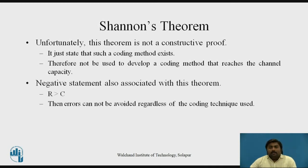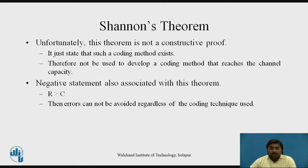A negative statement of this theorem also exists. The positive statement is that if R is less than or equal to C, by using any coding techniques you can achieve maximum reception with low probability of error. But in the negative statement, if R is greater than C — meaning your rate of information exceeds your channel capacity — then regardless of whatever coding techniques you use, you will still get errors in your received messages.